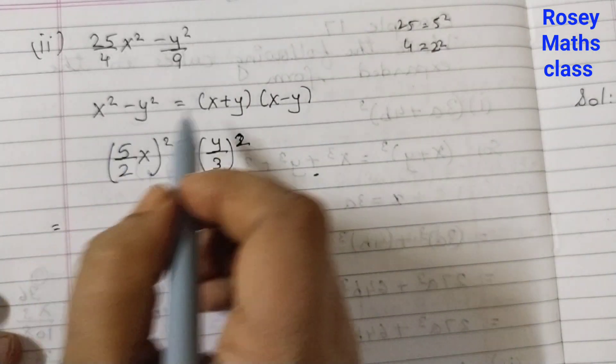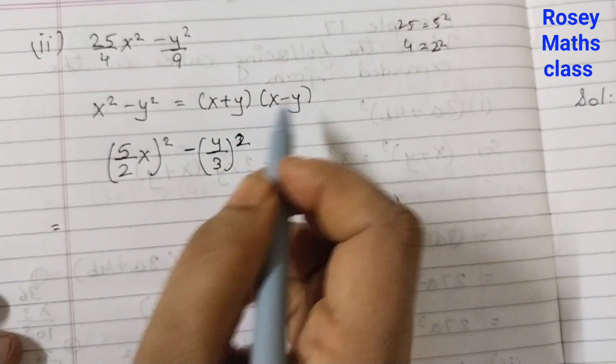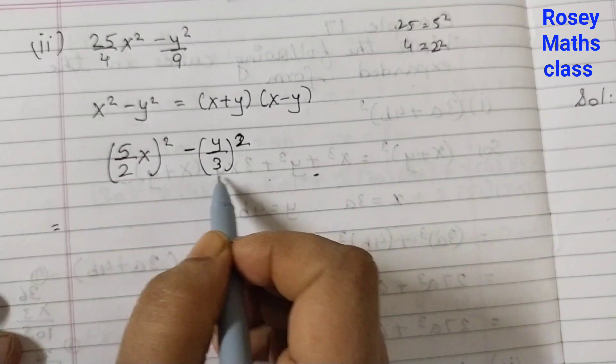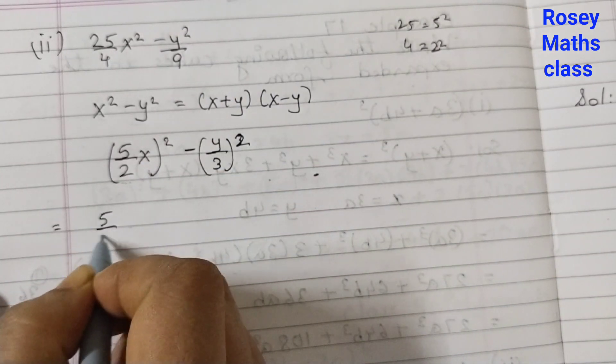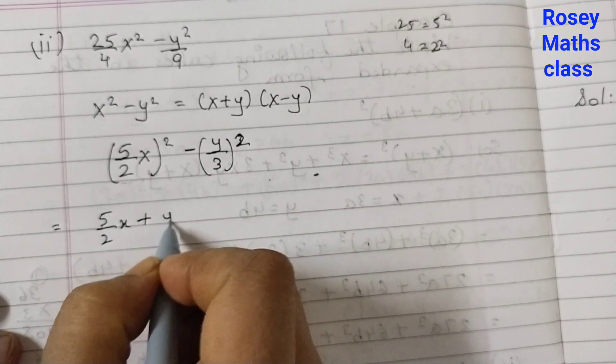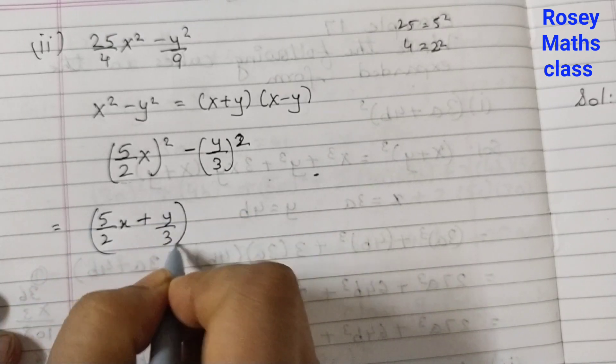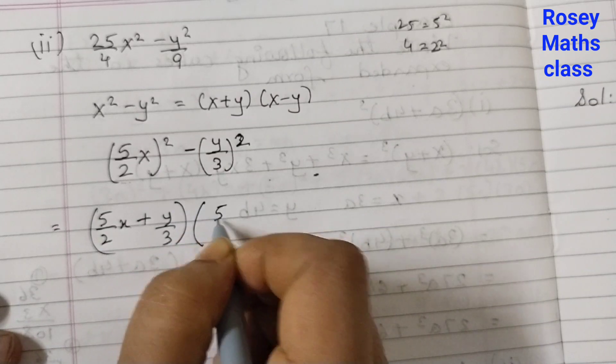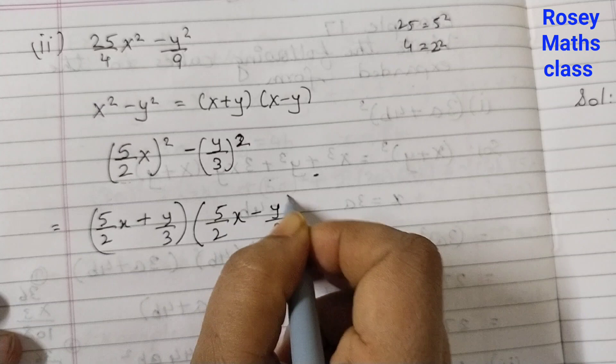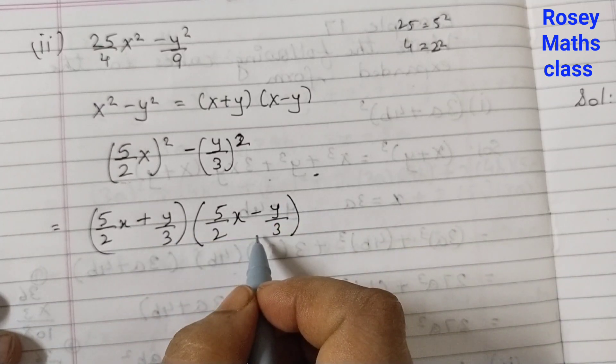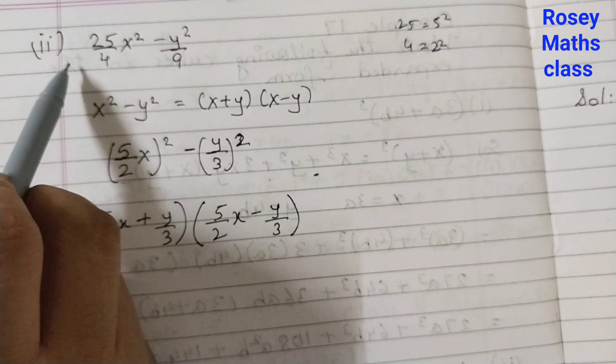Using the identity x plus y, x minus y. So this whole thing is x, this whole thing is y. If we are comparing this, so 5 by 2 x plus y by 3 into 5 over 2 x minus y over 3. These two are the factors of this given expression.